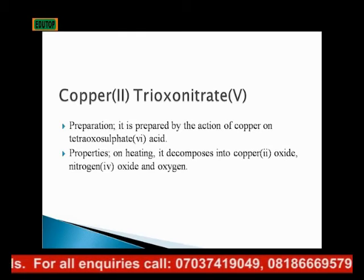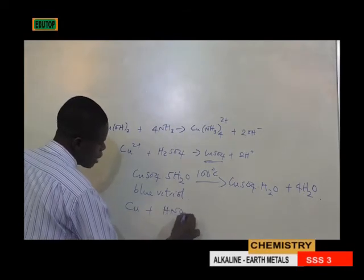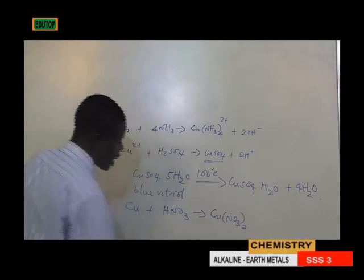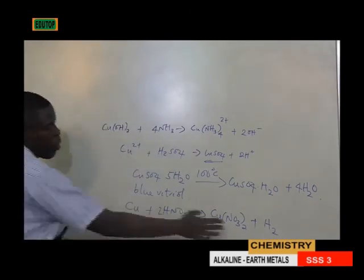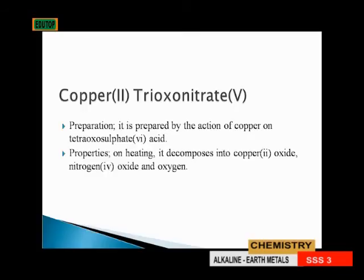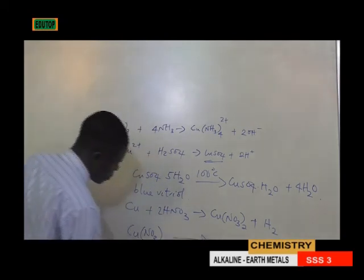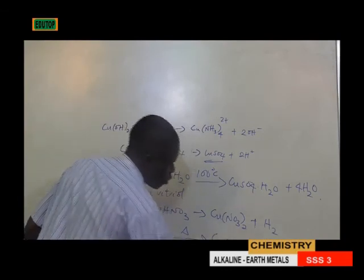Copper(II) trioxonitrate(V) preparation: it is prepared by the action of copper on trioxonitrate(V) acid, giving copper(II) trioxonitrate(V) and hydrogen gas. Properties: on heating it decomposes into copper(II) oxide, nitrogen dioxide, and oxygen.